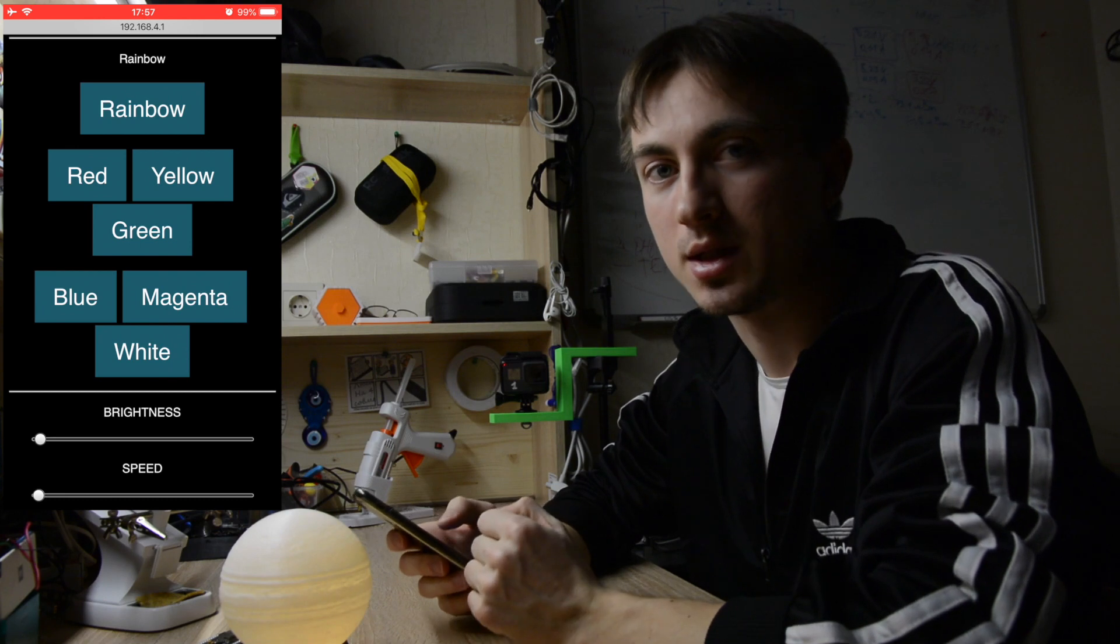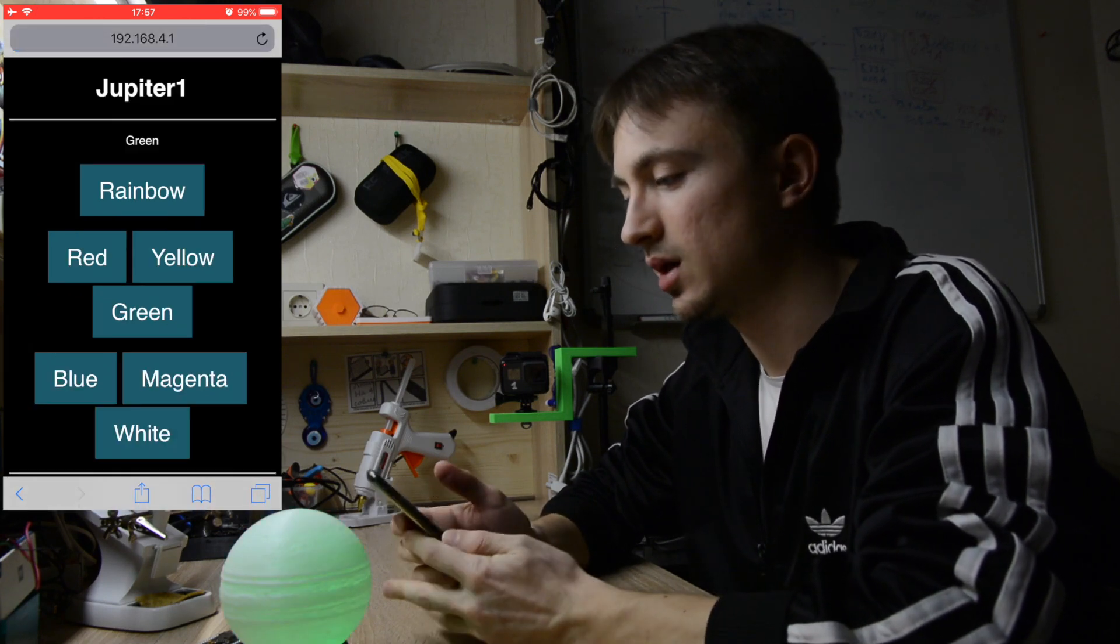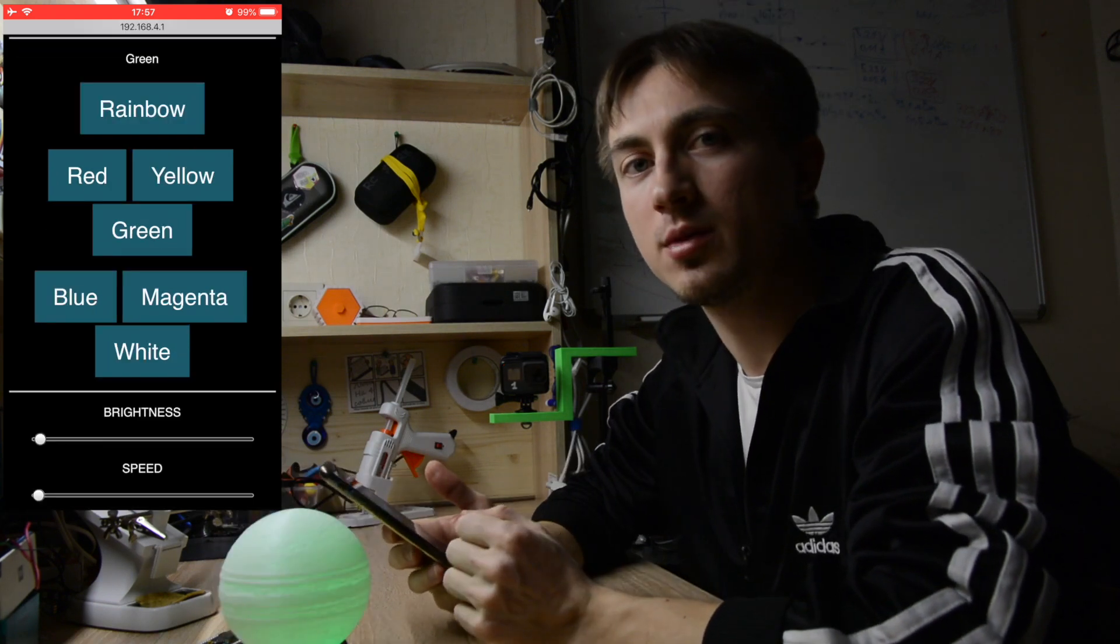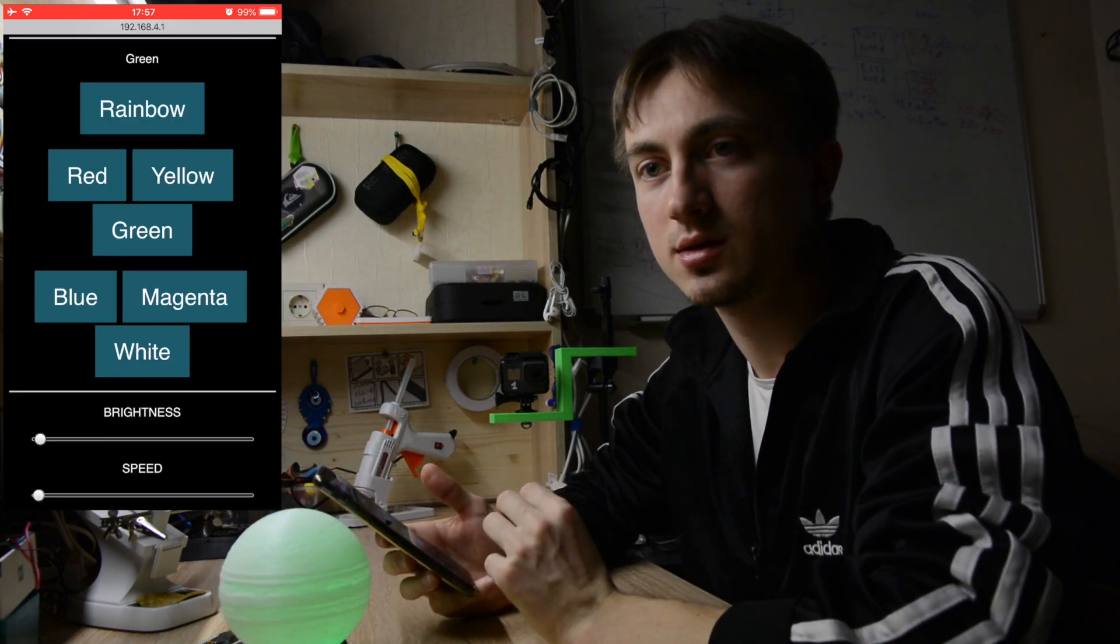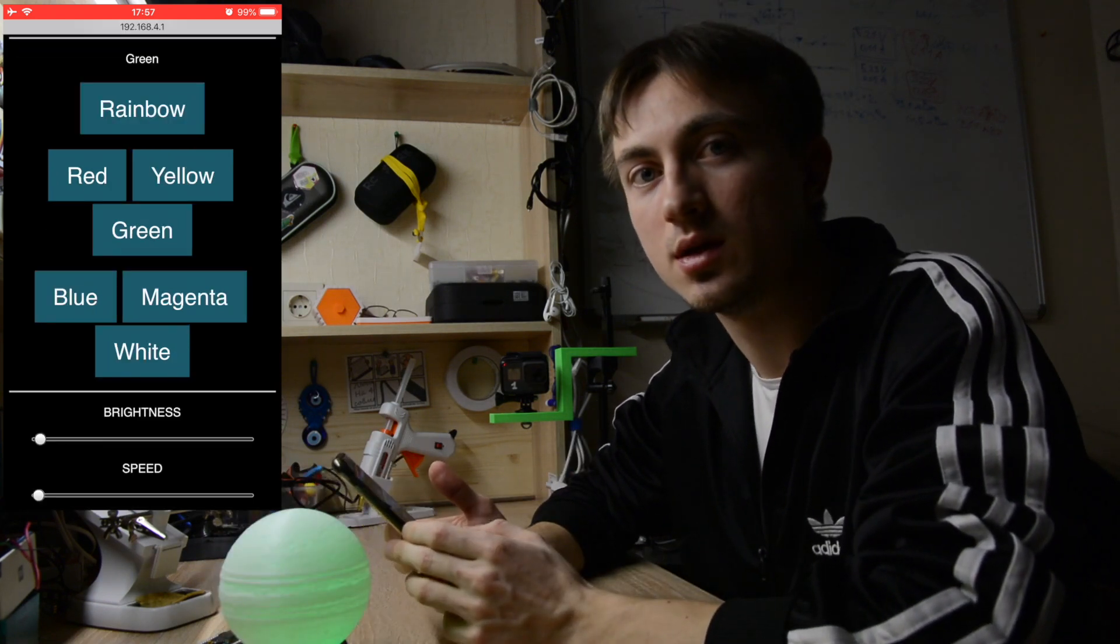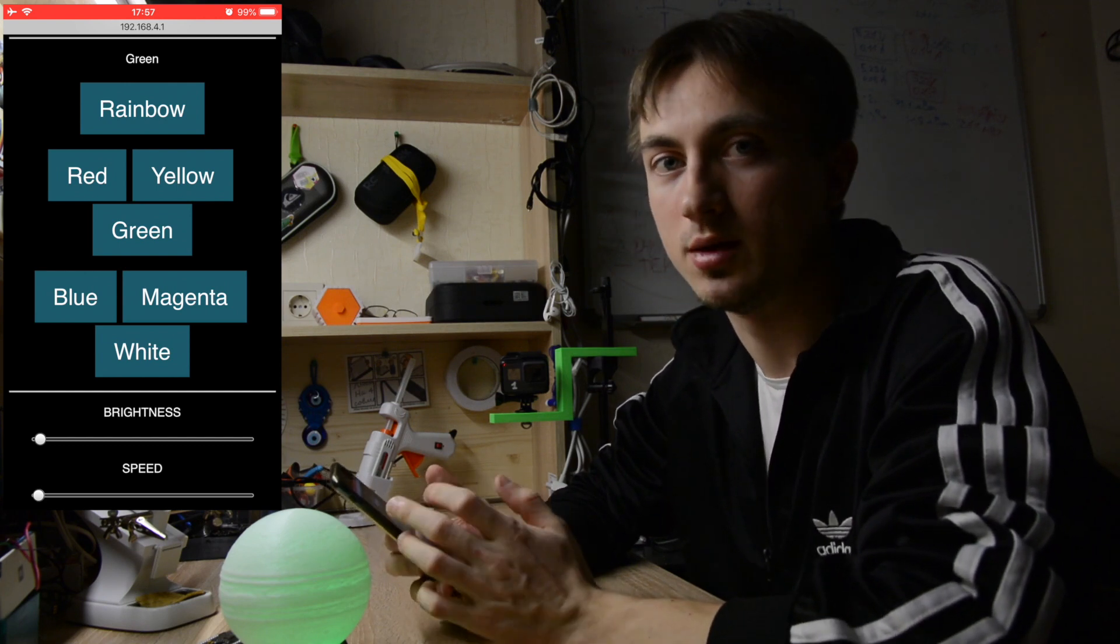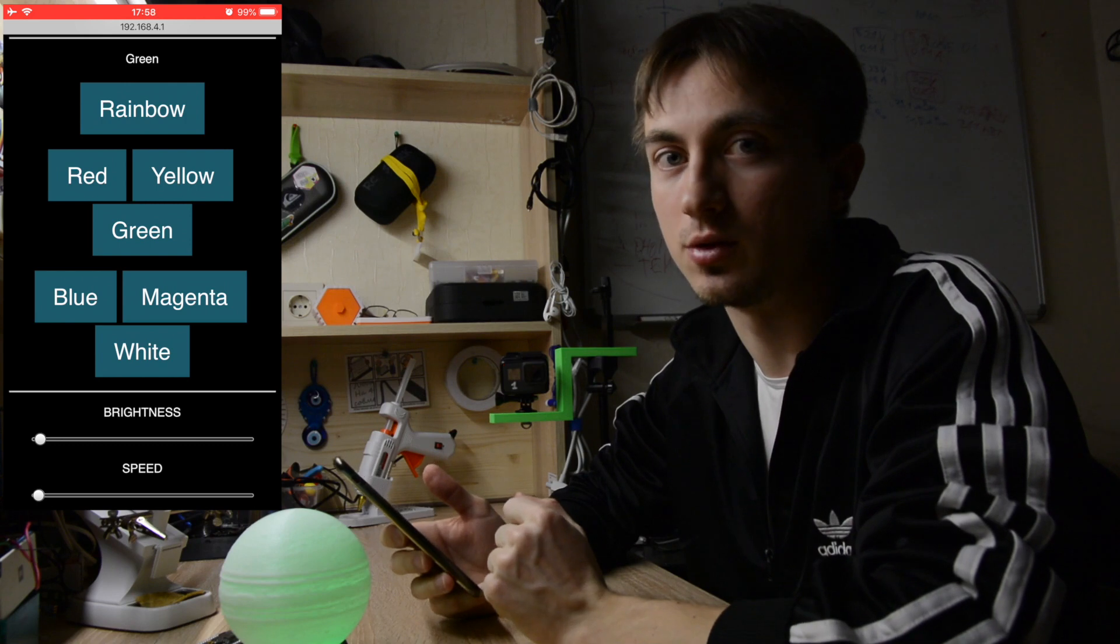Now I'm pressing the green button, and the lamp turns to green color. At the very bottom there are two sliders for brightness and for speed. The speed is only for the rainbow animation, and brightness is for all of them.